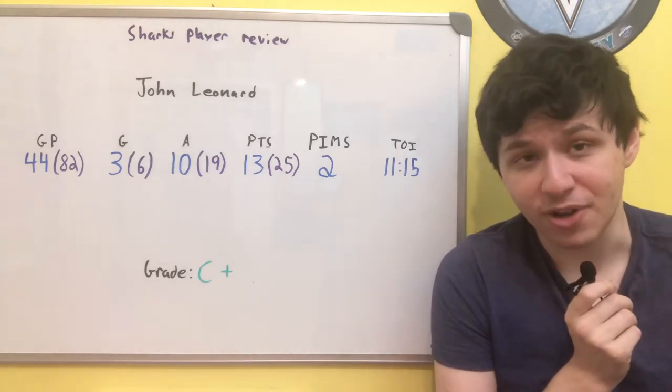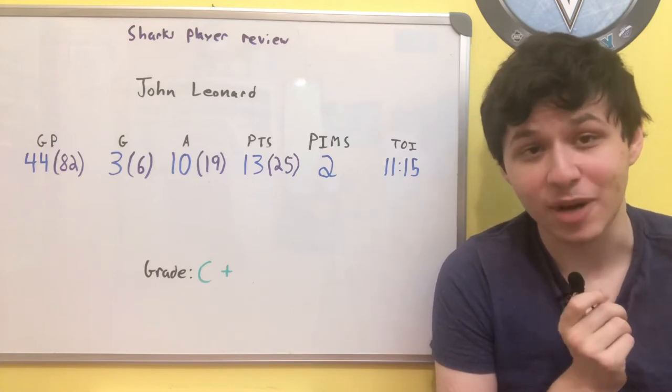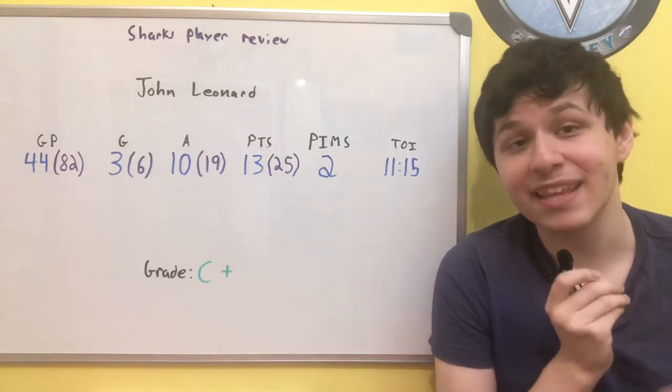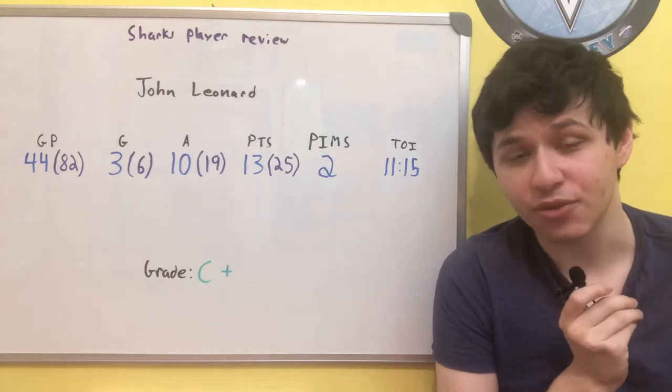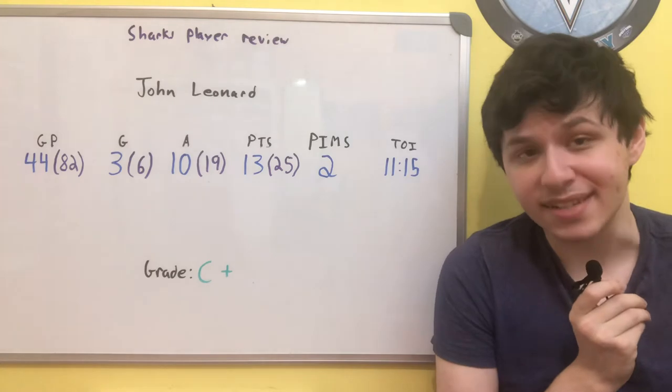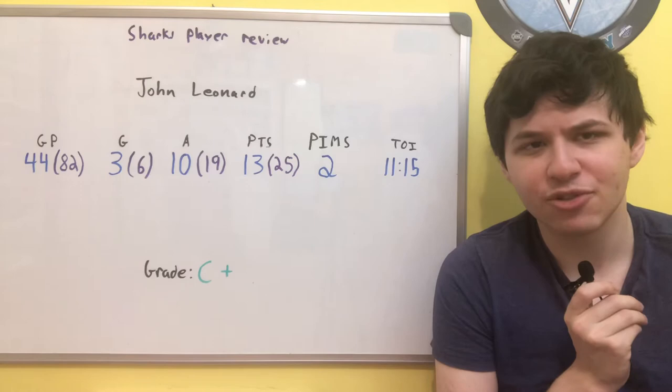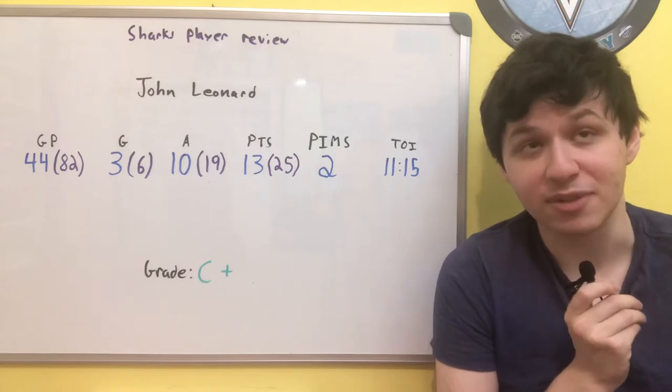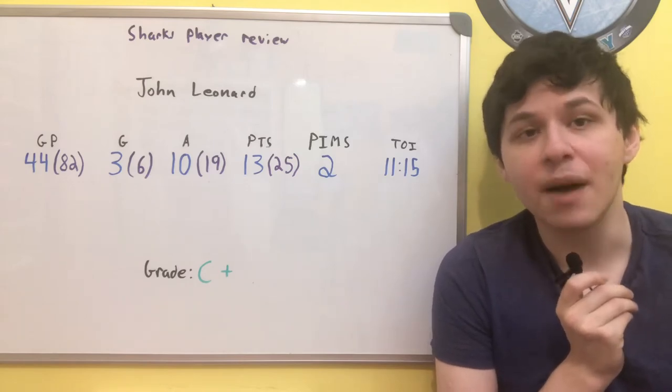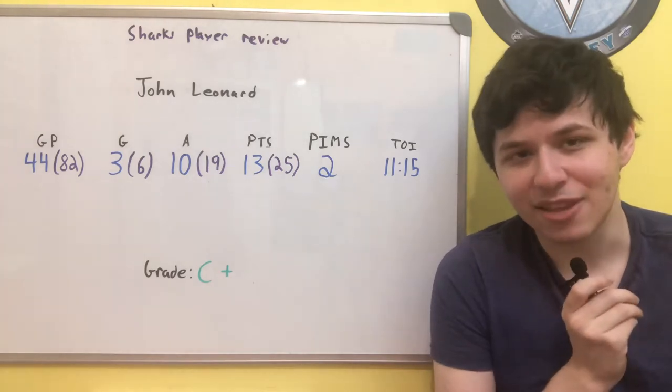After a very solid training camp for John Leonard, he actually found himself on the second line with Evander Kane and Tomas Hertl to start the season. In that very first game of his career against the Arizona Coyotes, he would actually put up two assists in a Sharks victory. Now they weren't super impressive assists, it's not as though John Leonard dominated while he was on the ice, but it was a good sign for what would come in the rest of the season. That wasn't necessarily the case, but it was nice to see him get those two points.